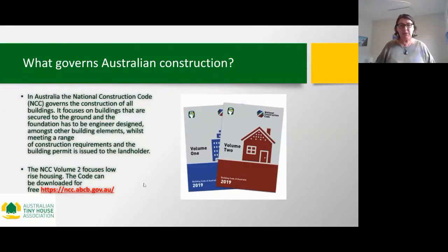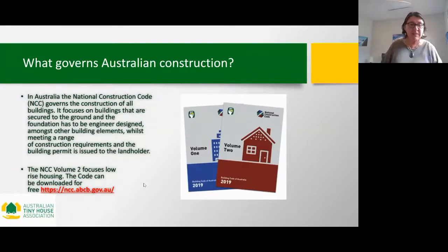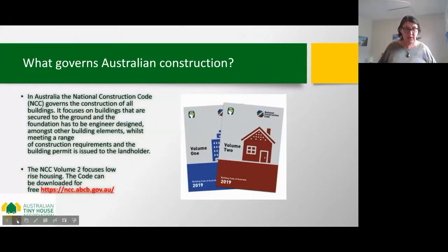The National Construction Code requires that foundations be engineer-designed, along with other building elements such as framing, roofing, concrete, steel, room separation, energy efficiency, and bushfire management. From a residential perspective — what we call low-rise dwellings — these are covered in Volume 2 of the NCC. We're blessed that it's freely available: you just need to provide a registration, log in, and download it, thanks to the Australian Building Codes Board making it free.